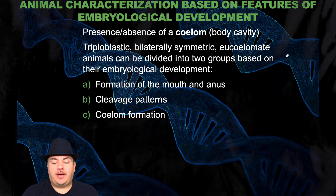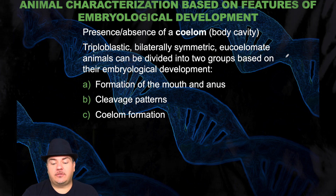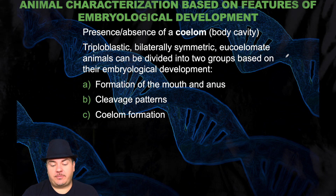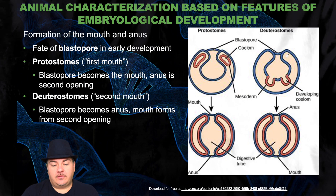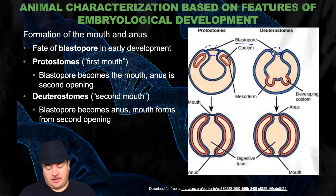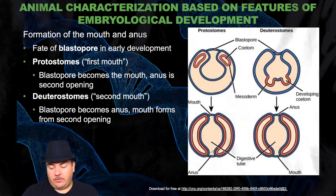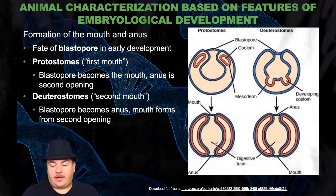The triploblastic, bilateral, coelomate animals can be divided into two groups based on their embryological development — based on the formation of the mouth versus the anus, the cleavage patterns, and the coelom formation. Remember that the gastrula forms the blastopore, which is the first opening in the organism. What ends up happening is it opens all the way through the organism to form the digestive tract — the mouth and the anus.